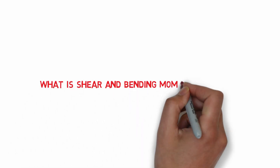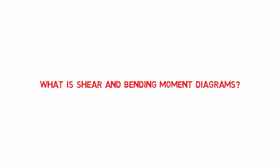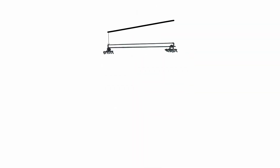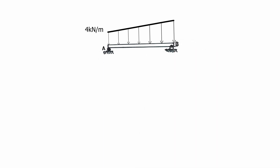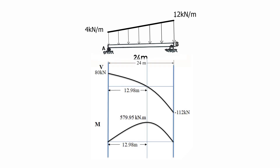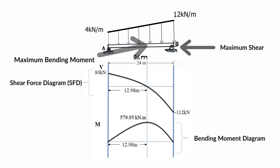Shear and bending moment diagrams provide detailed information about the variation of the shear and moment along the beam's axis. In order to properly design a beam, we need to determine the maximum shear and bending moment. These are vital information which can be used to decide where to place reinforcement materials within the beam, how to proportion the size of the beam at various points along its length, what should be the proper cross section of the beam, or where to place supports.